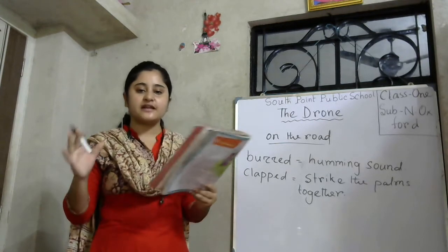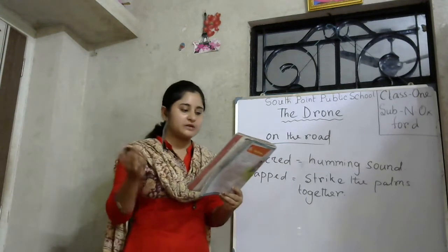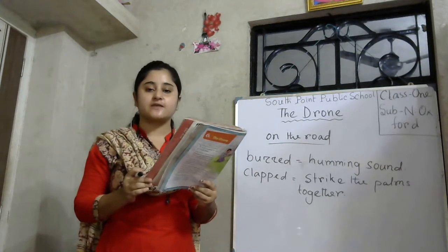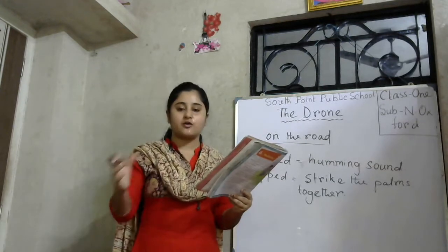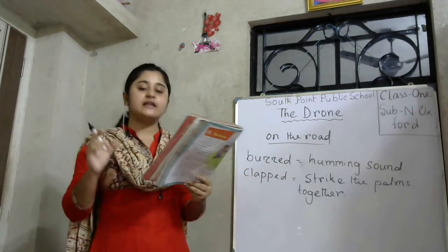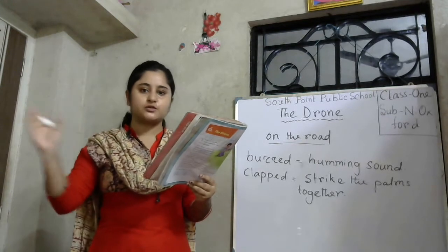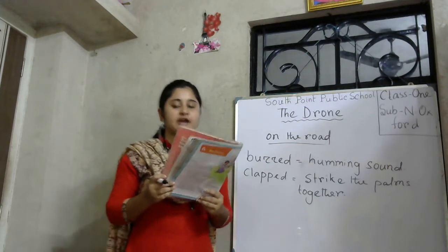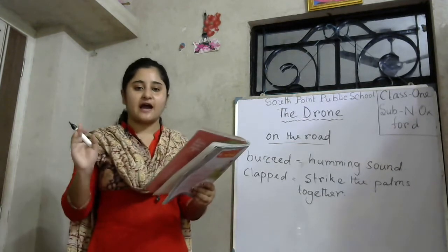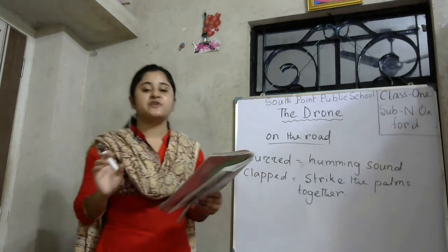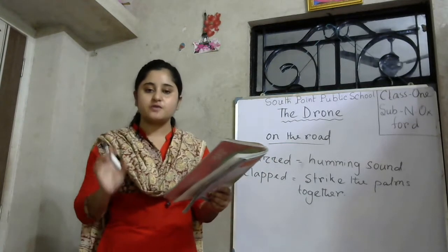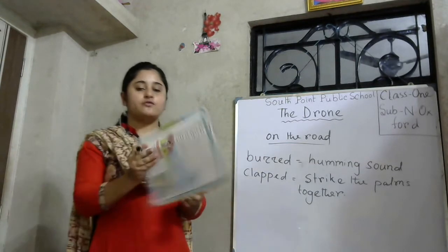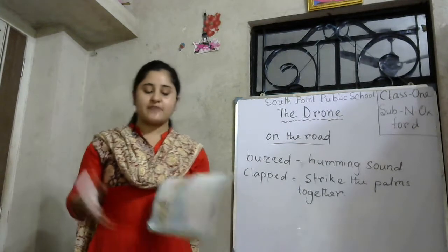Suddenly Bikram shouted, 'Stop! Go back to that tree. I saw something there.' Dad pressed 6 and the drone came back. They are controlling the drone by pressing some numbers — 6 means back, so when they press 6 the drone will come back.